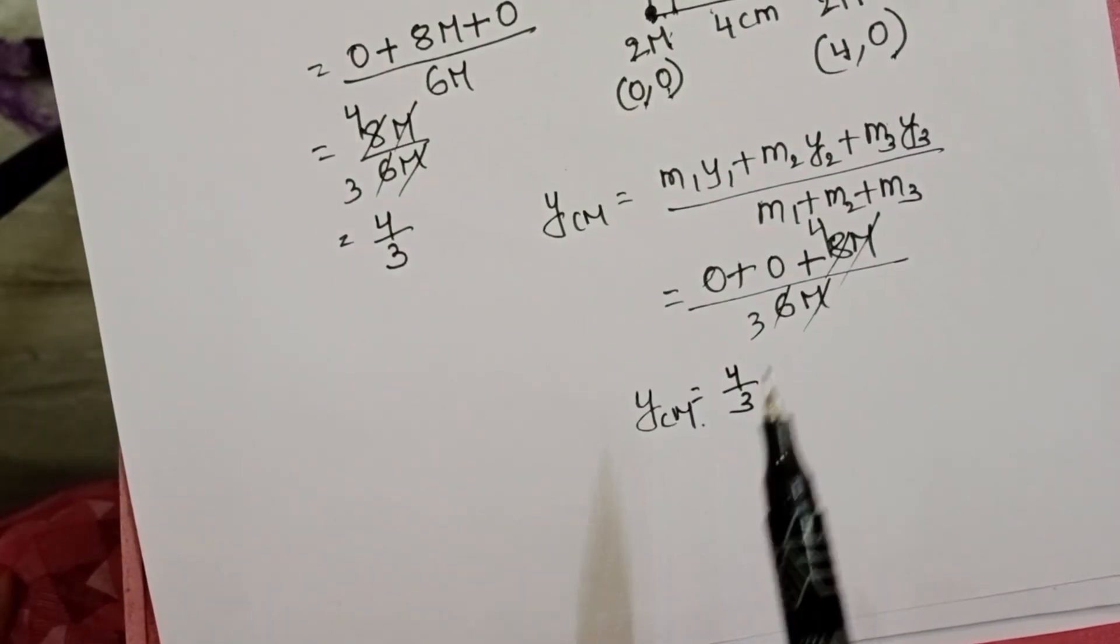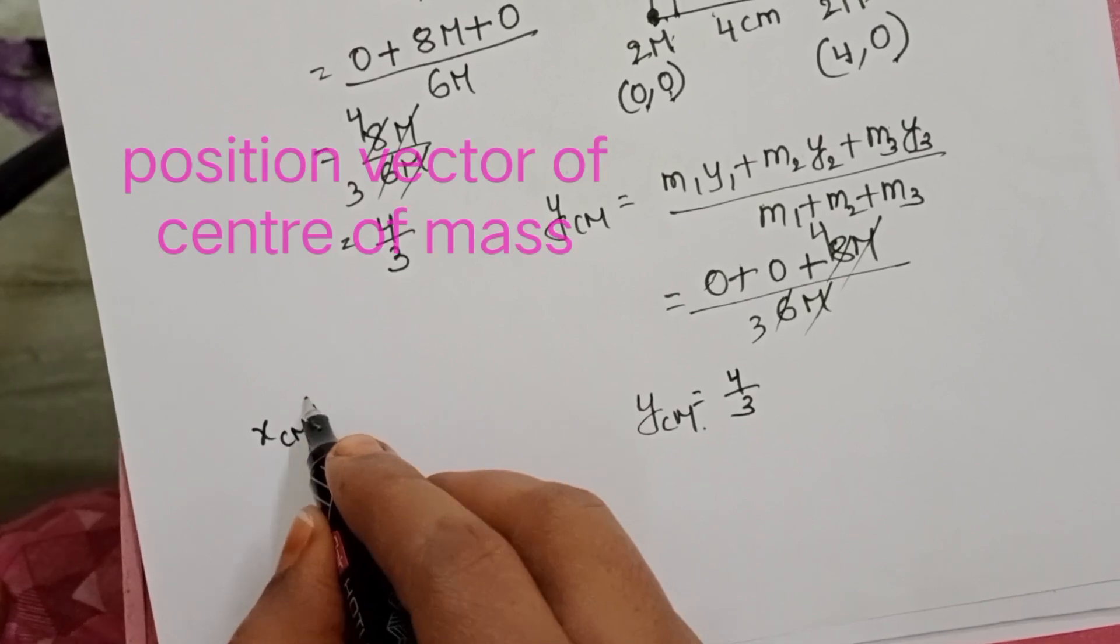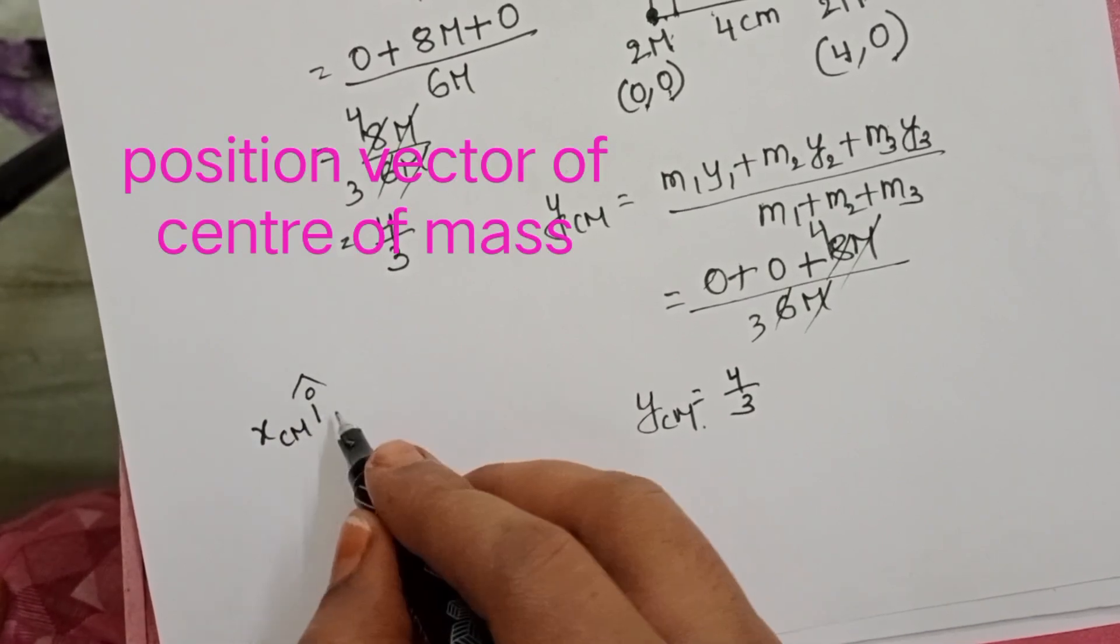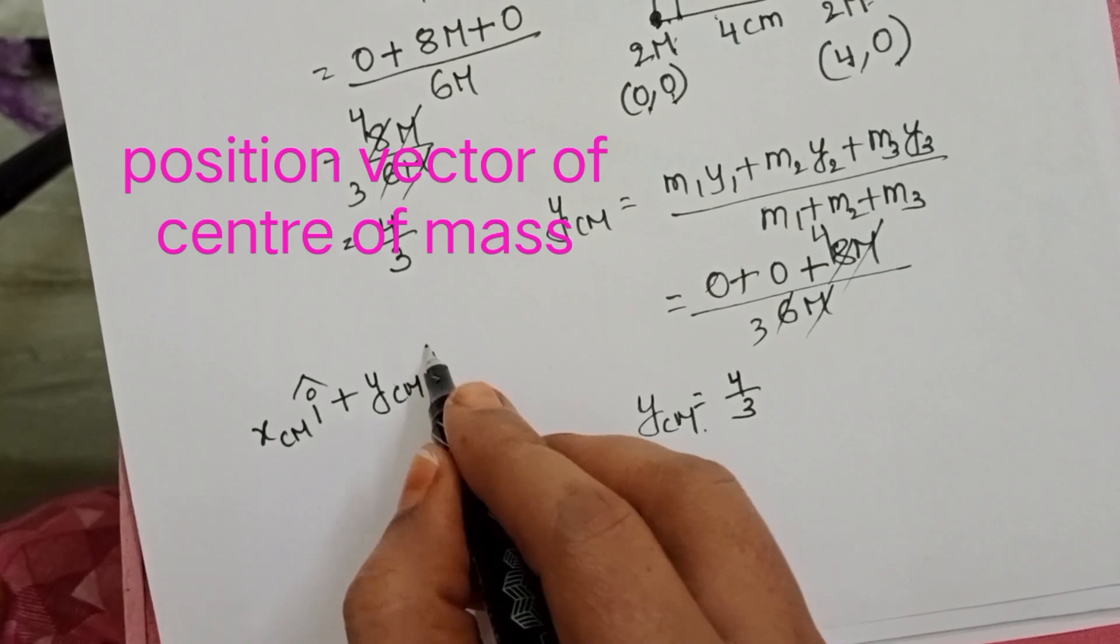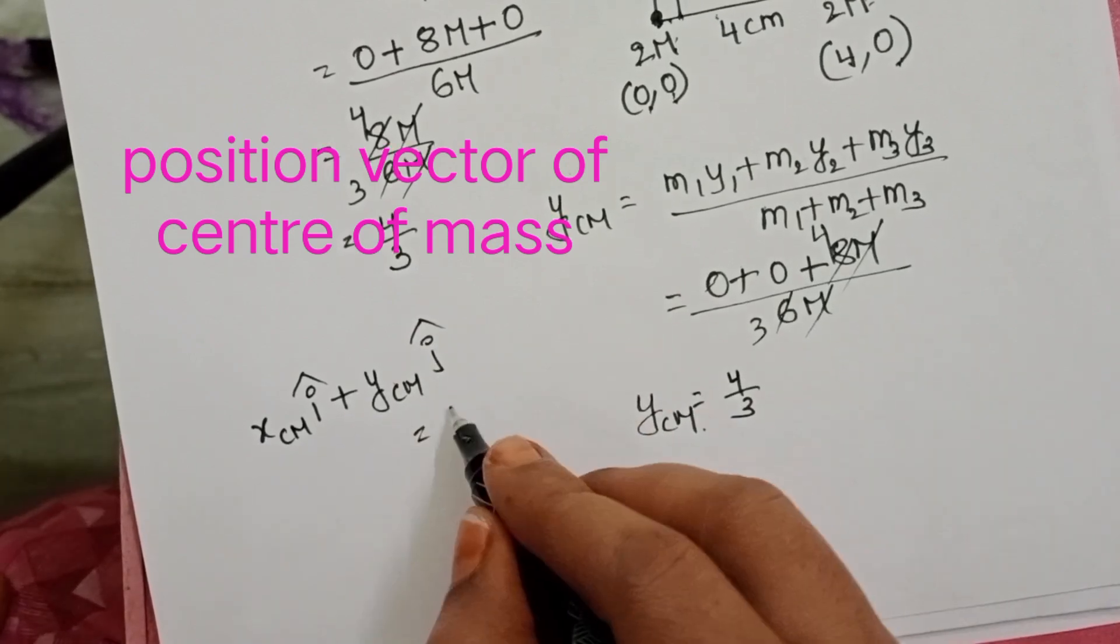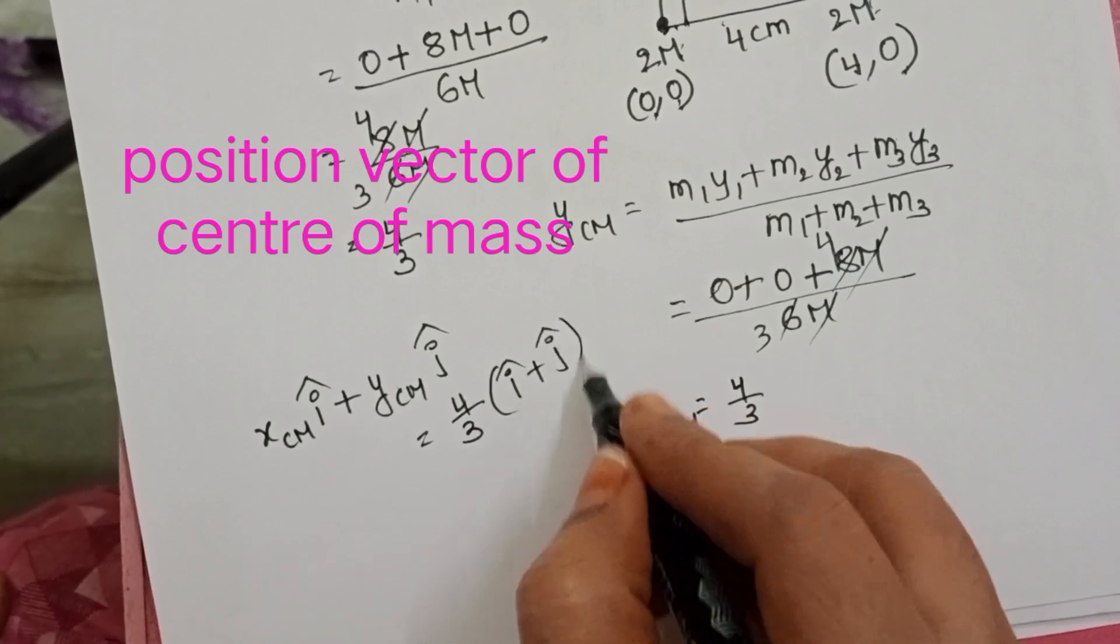The position of center of mass of the system along x-direction unit vector is i-cap and along the y-direction unit vector is j-cap. 4 by 3 of i-cap plus j-cap.